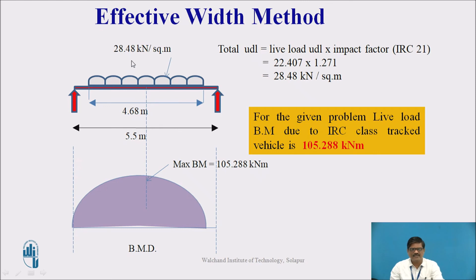Once we get this loading diagram, the rest is simple. We need to find the bending moment, but prior to that, we have to apply an impact factor as per IRC-21. For the given loading, the impact factor works out to be 1.27. The load intensity 22.407 is to be multiplied by 1.27, so the intensity works out to be 28.48. The bending moment at the center can be determined, which will be the maximum bending moment, and this comes out to be 105.288 kN meter. This is how the live load bending moment is determined using effective width method.